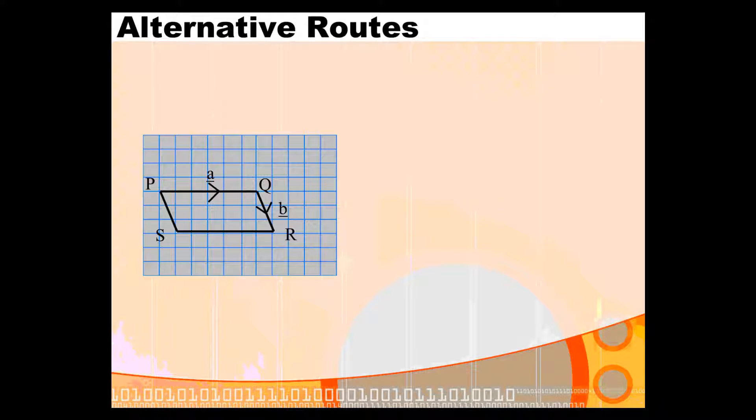If we look at this parallelogram, you can see that the journey from P to Q is A, and the journey from Q to R is described as vector B. Now if you were asked to express PR in terms of A and B...